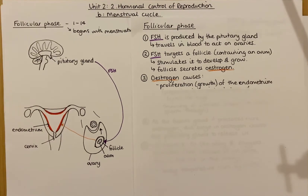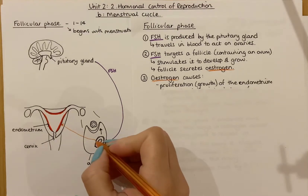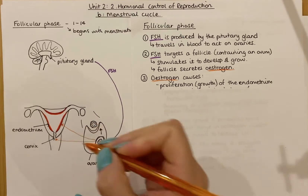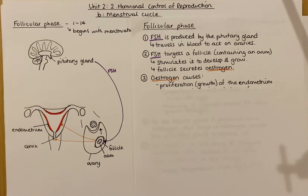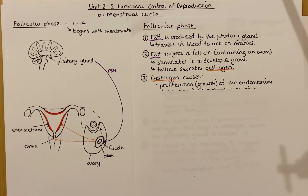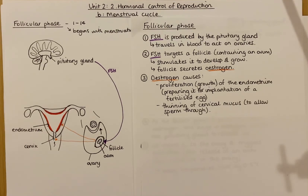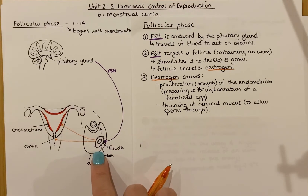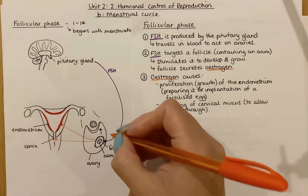As well as that, the follicle produces oestrogen which targets another area: the cervix. The cervix is the entrance to the womb and produces mucus. For fertilization to happen, sperm must enter through the cervix and swim up through the cervical mucus, so the cervix has to be thin to allow sperm through. The cervix is thinned by oestrogen. As the follicle grows and produces more and more oestrogen, there is a large surge — a big peak — in oestrogen.